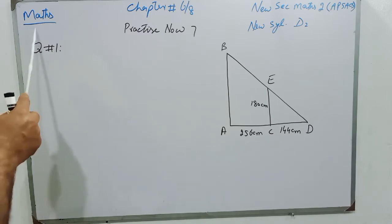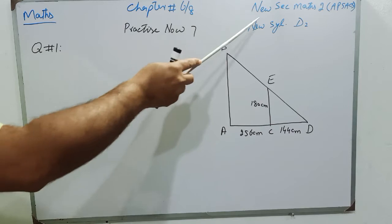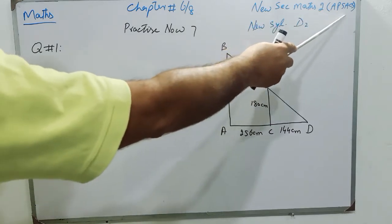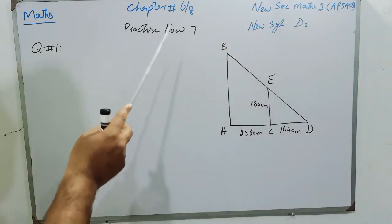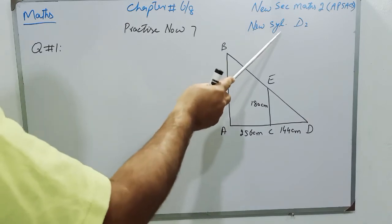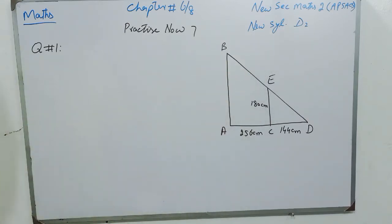Dear students, this is Mathematics Chapter 6 for New Century Mathematics Book 2 of IGCSE students, Class 7, and Chapter 8 for New Syllabus Mathematics D2 for E-Level O-Level students. This is Practice Number 7, Question Number 1.